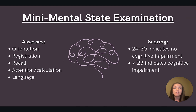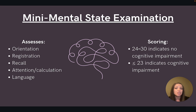The mini-mental state examination, or the MMSE, assesses orientation, registration, recall, attention and calculation, and language. This assessment is scored out of 30 points, and scores may change slightly depending on the source, but in general, 24 to 30 indicates no cognitive impairment, and a score of 23 points or lower is considered some form of cognitive impairment and possible dementia.